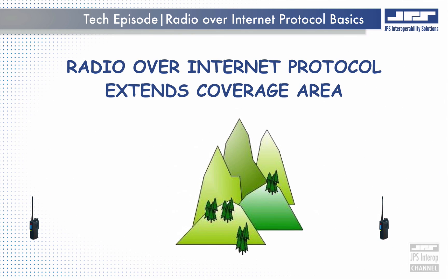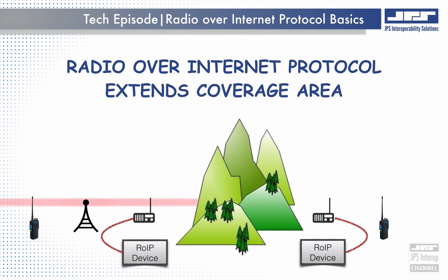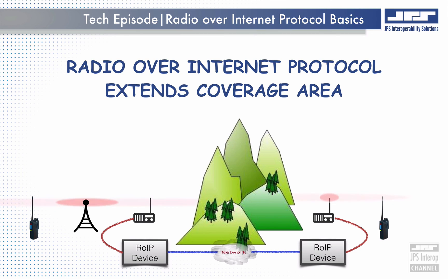Getting back to land mobile radio and specifically coverage: when the technology is challenged by outside influences such as physical obstacles, we can use other technologies to overcome those challenges — in this case, a network in conjunction with ROIP. We can position ROIP devices and donor radios within the RF bounds of the radio system, then place a complementary ROIP device and donor radio at a location that's isolated from the original radio system. We then link the two ROIP devices with a network, thus virtually extending the range of the radio system without redesigning it.